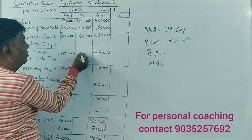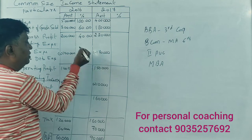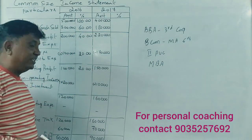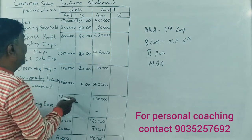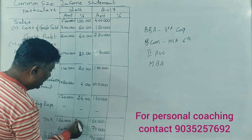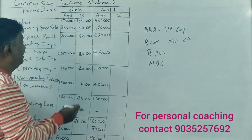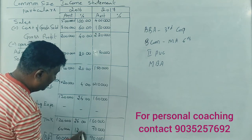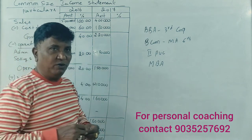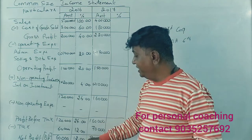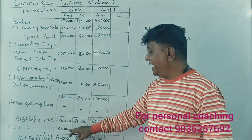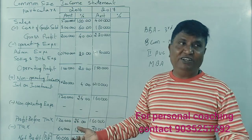Operating expenses: 1 lakh divided by 5 lakh into 100 equals 20%. Other income: 20,000 divided by 5 lakhs into 100 equals 4%. Total income: 1 lakh 20,000 divided by 5 lakhs equals 24%. Net profit: 60,000 divided by 5 lakhs equals 12%. So net profit is 12% of sales in 2016.